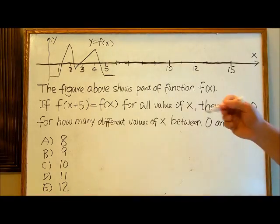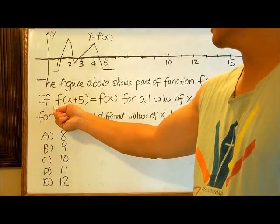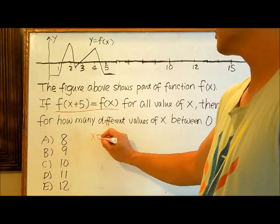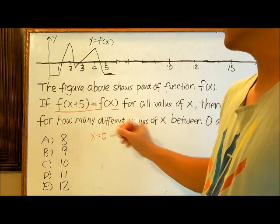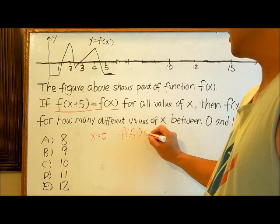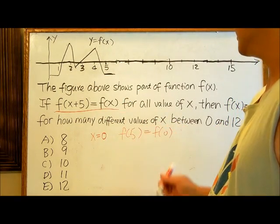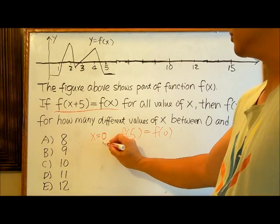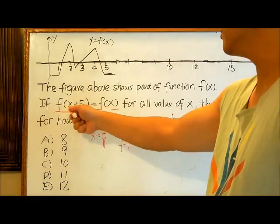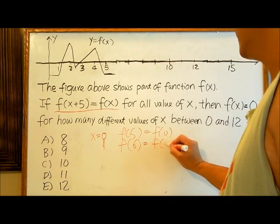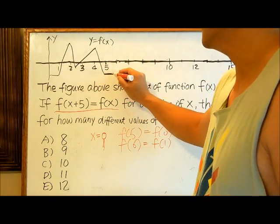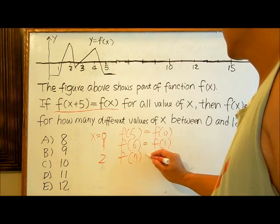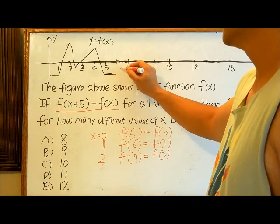The key to solve this problem is to understand what the condition means. Let's put x equals 0: f of 0 plus 5 is f of 5, which equals f of 0. This means f of 5 is the same as f of 0. Now we can put x equals 1: f of 1 plus 5 is f of 6, which equals f of 1. So x=6 is the same as x=1.